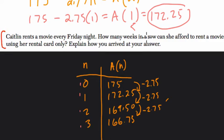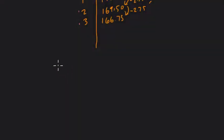Caitlin rents a movie every Friday. How many weeks in a row can she afford to rent a movie using her rental card only? I think the best way to set this up is to say you have $175 minus $2.75 per movie. At what number of weeks will this equal 0? N is the number of movies, but it's also the number of weeks, because every one movie she rents is another week. So if we find out when this equals 0, that will tell us the number of movies it takes to get the card down to 0 before it really costs something.